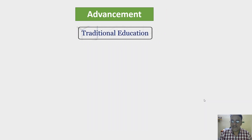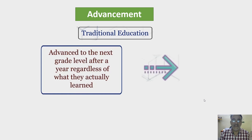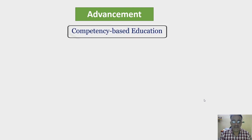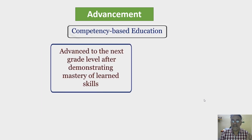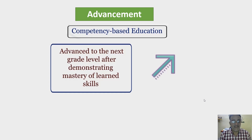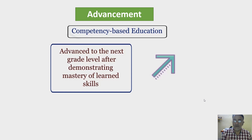In the traditional system, students are advanced to the next grade level after a year, regardless of what they actually learned. In competency-based education, a student's advancement is not time-based. It rests on the attainment of learning experience expectations and demonstrating mastery of learned skills. So it is growth-oriented.